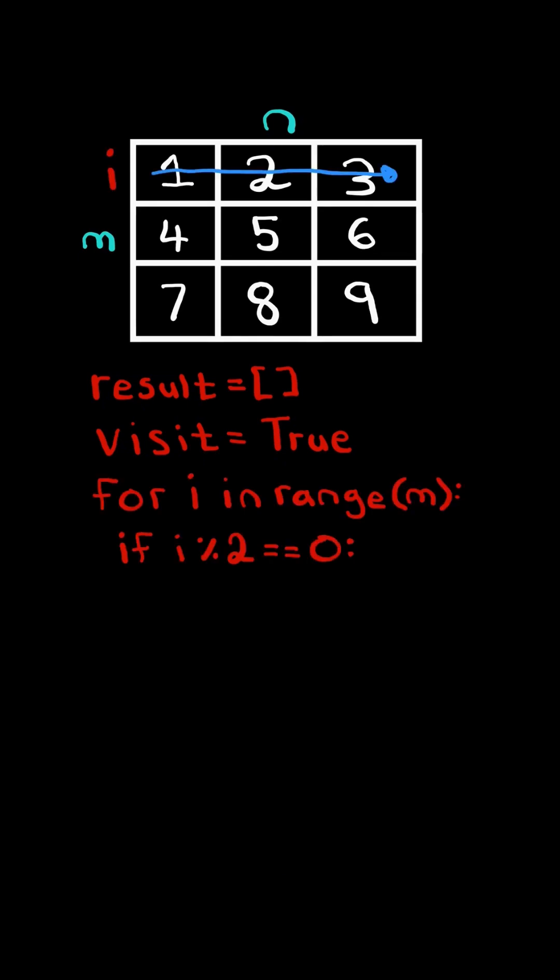If we are on an even row, then we know we must traverse left to right, and so we create a range iterating from 0 to n. In other words, left to right.